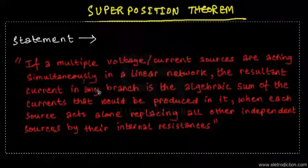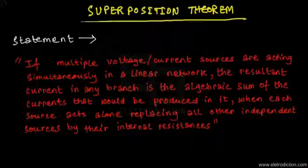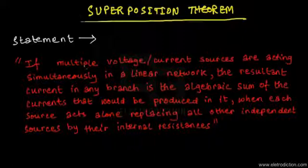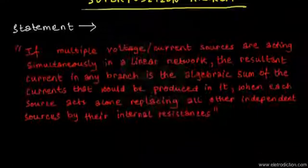The superposition theorem states that if multiple voltage or current sources are acting simultaneously in a linear network, the resultant current in any branch is the algebraic sum of the currents that would be produced in it when each source acts alone, replacing all the other independent sources by their internal resistances.